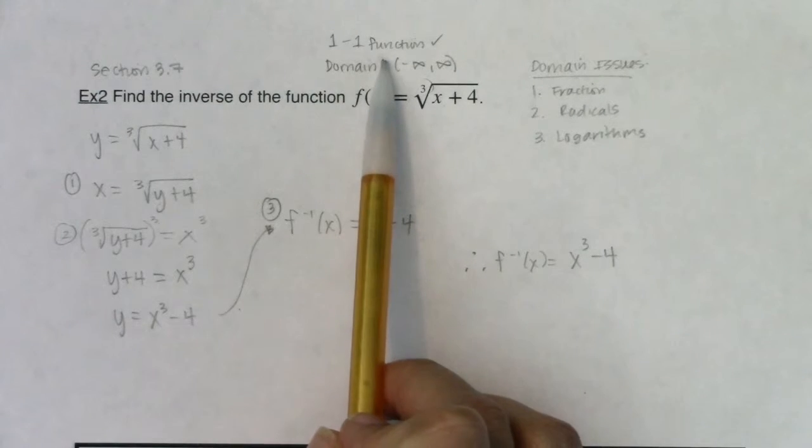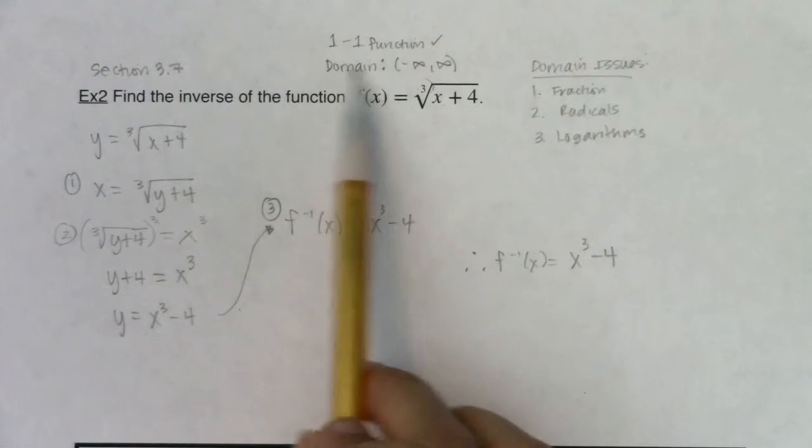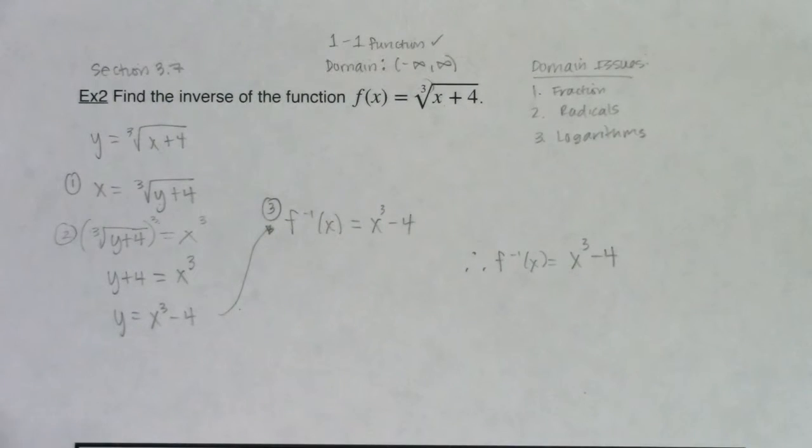We're going to start restricting domains because sometimes you don't have a one-to-one function right out the gate. Math people were like, well, if we don't have a one-to-one function, what can we do? How can we get f inverse to exist? Well, we realized we could start restricting domains and all of a sudden functions would become one-to-one. Now we did that a little bit in section 3.7, but we're going to review it in example 3. I'll see you in a bit.